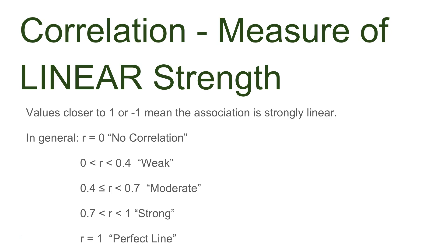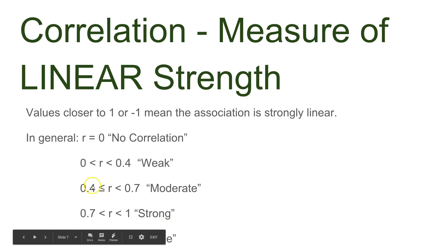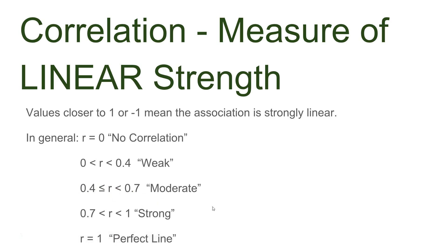Between 0 and 0.4 we consider that weak. Now these are very subjective — in some courses, 0.4 might be moderate to strong, so make sure you talk to your professors, especially depending on the content area like psychology or education. But generally for statistics, 0 to 0.4 is weak. From 0.4 to 0.7 is moderate — so if it's exactly 0.4 or 0.7, we call it moderate. And anything 0.7 to 1 is going to be strong.